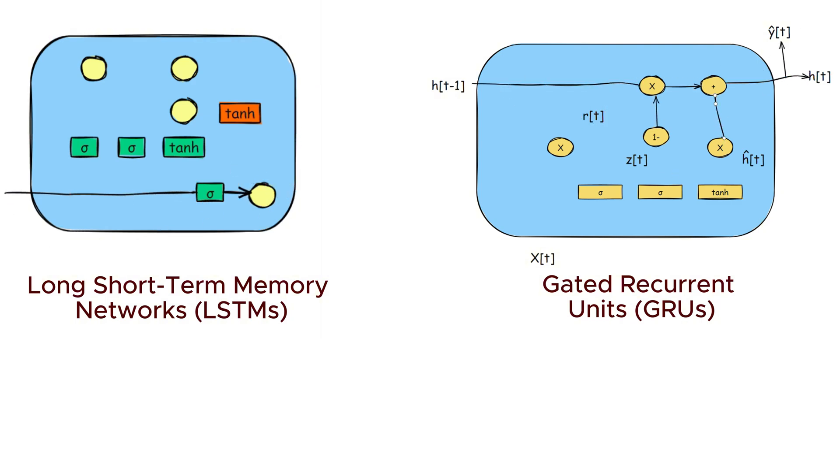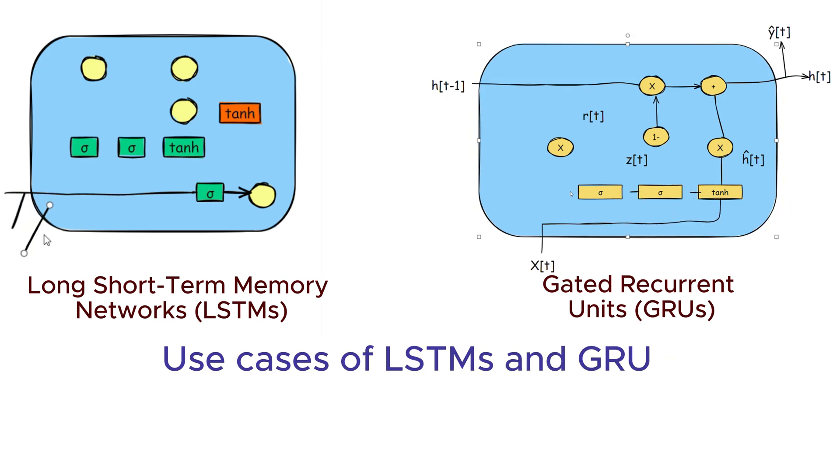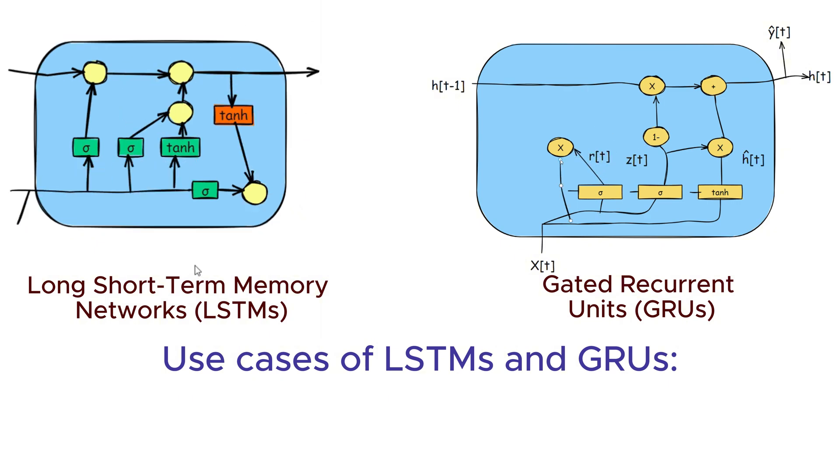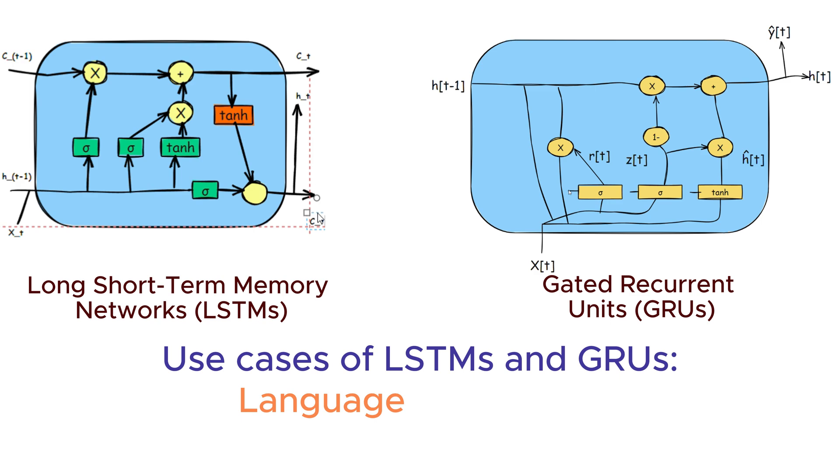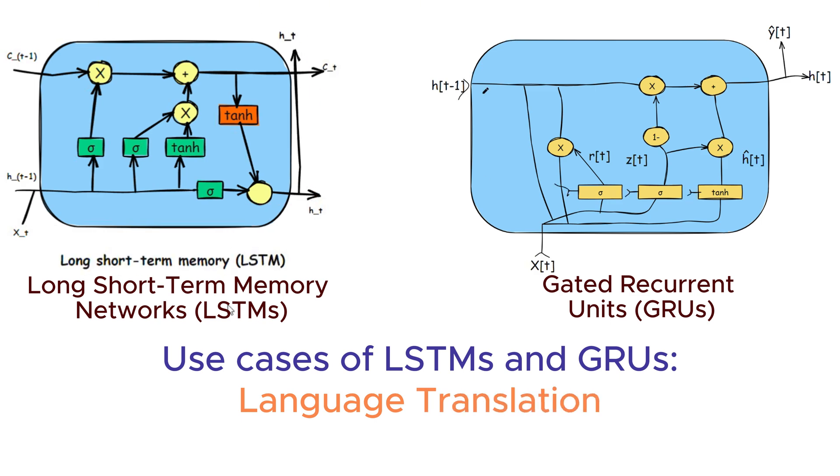What are the use cases of LSTMs and GRUs? Long-term dependencies: LSTMs and GRUs are particularly useful for tasks requiring the modeling of long-term dependencies in the data. Language translation: They are effective in translation tasks where understanding the context over long sequences of text is important. Stock market prediction: LSTMs and GRUs can capture long-range temporal dependencies in financial time series data, making them suitable for stock market prediction.